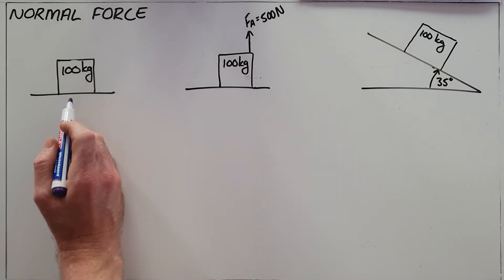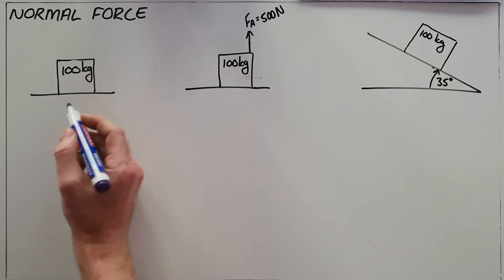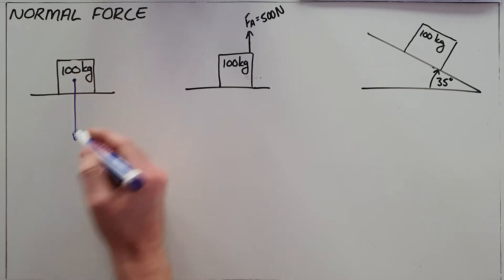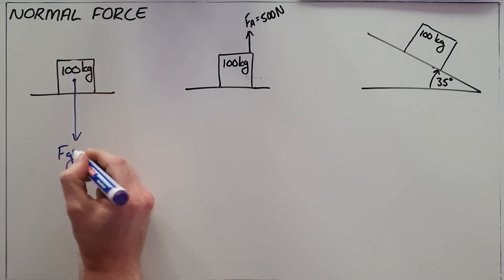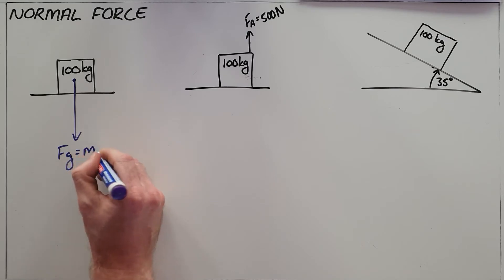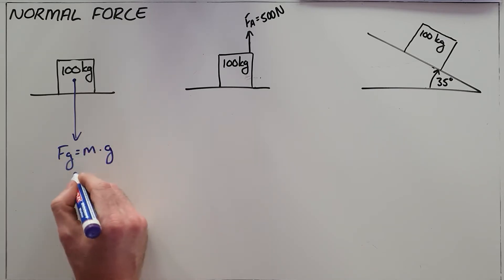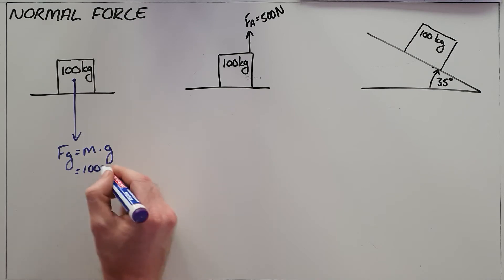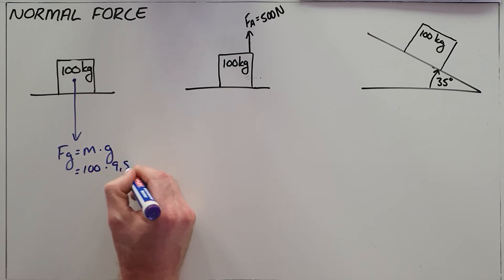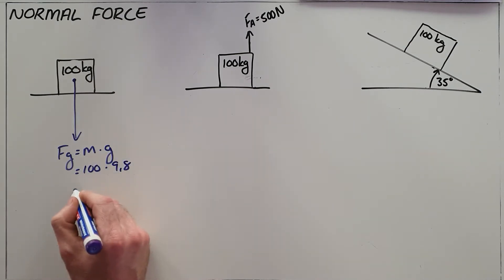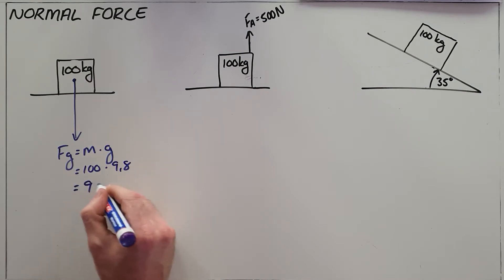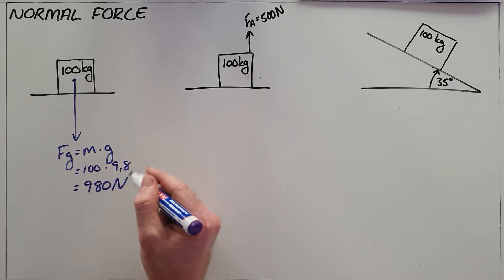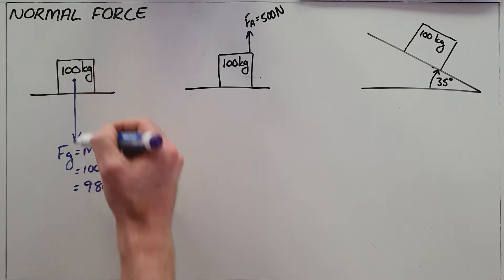The first example is an object that is at rest on a surface. Since it has mass, it must have a force of gravity acting on it. We can calculate that force of gravity by taking the mass of the object, which is given as 100 kilograms, and multiplying it by the gravitational acceleration constant of 9.8 to find that there is a 980 Newton force acting downward on this object.